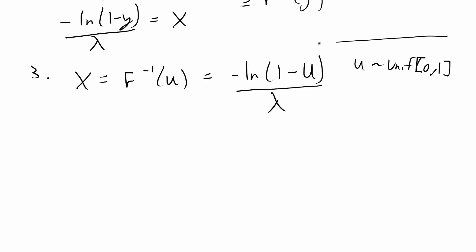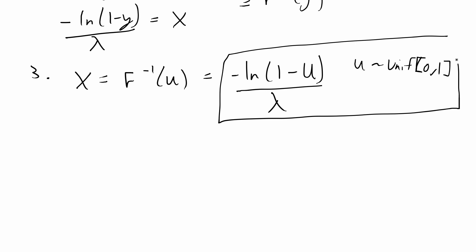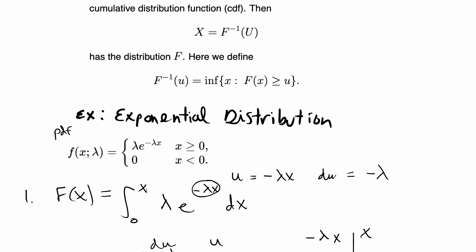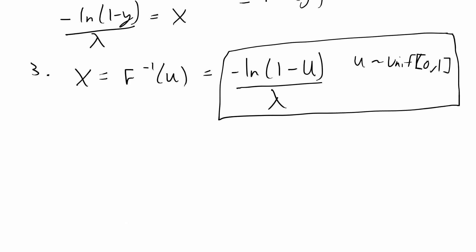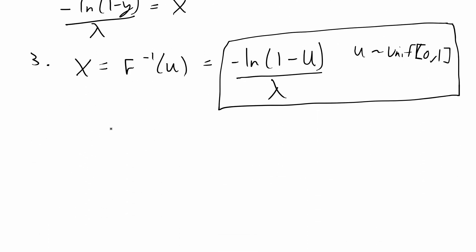This is basically our final solution, and if we sample from a random variable with this distribution we will get x that's exponentially distributed with parameter lambda. I'm going to now switch over to the R demo and generate 1,000 pseudo-random samples that are exponential with lambda, and for this demo I'm going to set lambda equal to 3.